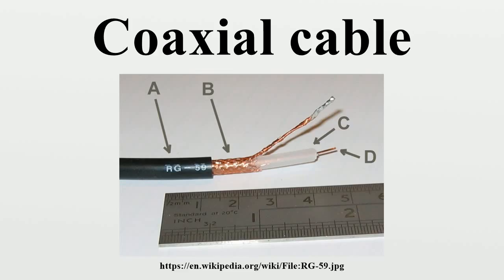Supports shaped like stars or spokes are even better but more expensive and very susceptible to moisture infiltration. Still more expensive were the airspace coaxials used for some intercity communications in the mid-20th century, where the center conductor was suspended by polyethylene discs every few centimeters. In some low-loss coaxial cables such as the RG-62 type, the inner conductor is supported by a spiral strand of polyethylene, so that an airspace exists between most of the conductor and the inside of the jacket. The lower dielectric constant of air allows for a greater inner diameter at the same impedance and a greater outer diameter at the same cut-off frequency.